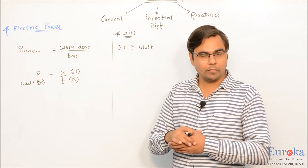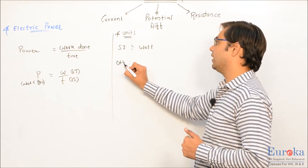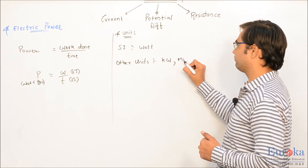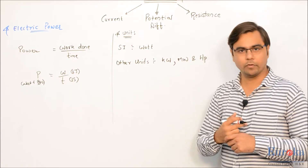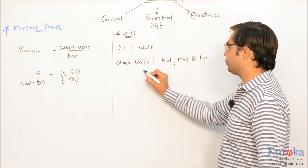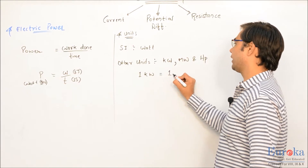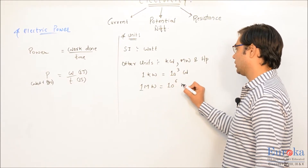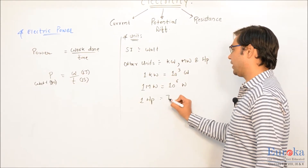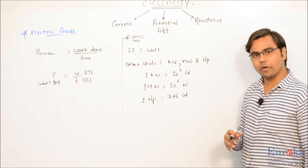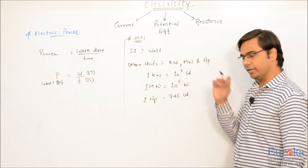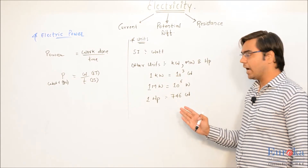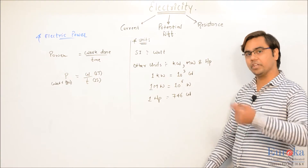For power there are other units as well. The other units of power are kilowatt, megawatt, and another highly used unit called horsepower. One kilowatt is 10 raised to 3 watts, one megawatt is 10 raised to 6 watts, and one horsepower equals 746 watts. To convert kilowatt to watt, multiply by 10³; megawatt to watt, multiply by 10⁶; horsepower to watt, multiply by 746. To go from watt to any of these units, divide by the corresponding factor.